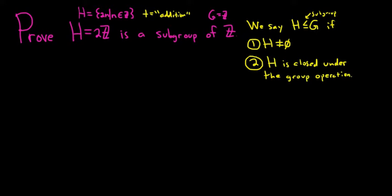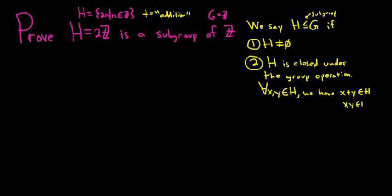What does that mean? That means that for all x and y in h, we have x plus y also in h. I'm using plus here because the operation in this example is addition. If you're using regular group multiplication, you would write xy in h. Typically we use the plus sign if we know the operation is commutative; otherwise we just use times.